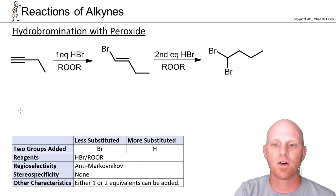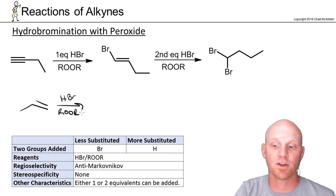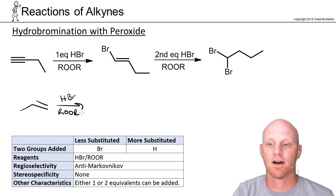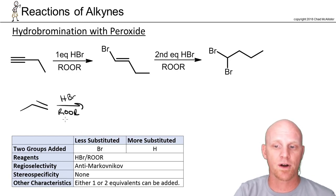Just like with alkenes, you can add HBr specifically in the presence of peroxide. You might recall this is specific for HBr. HCl and HI do not do anything. ROR here stands for peroxide. When we add that to an alkene, it goes anti-Markovnikov.